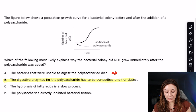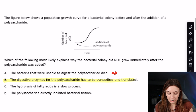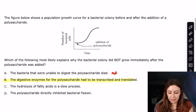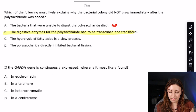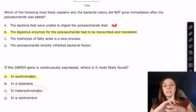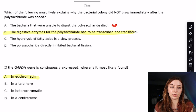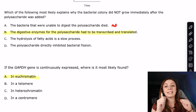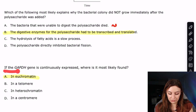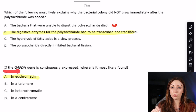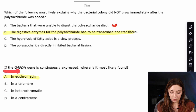The next question asks: if the GAPDH gene is continuously expressed, where is it most likely found? Simplifying the question: what kind of DNA can be continuously or constitutively expressed? The answer is euchromatin. Euchromatin is loosely coiled, so transcription proteins can access the necessary sites. Heterochromatin is tightly coiled, preventing transcription machinery from getting in. That's all this question is really testing — whether you know the difference between euchromatin and heterochromatin.